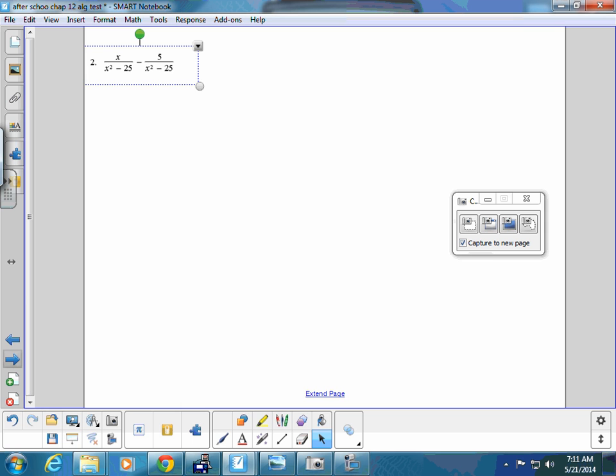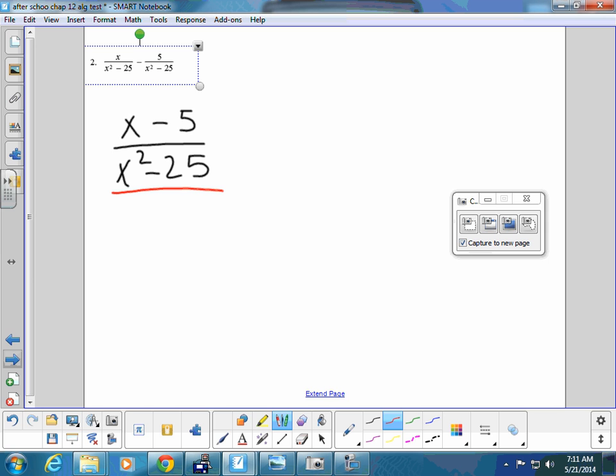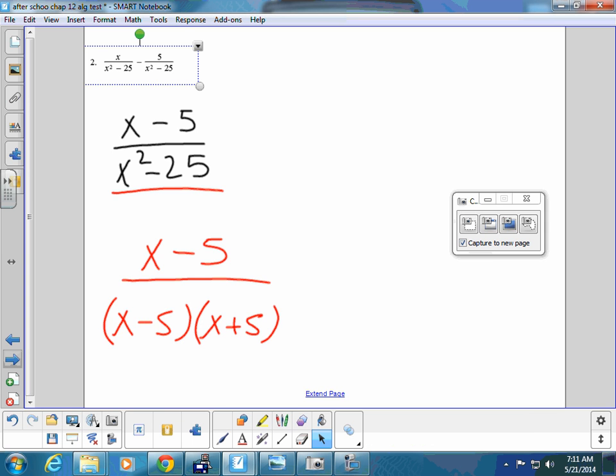Moving on to number 2. Number 2 also has a common denominator, so I can just combine the top. However, in this test, you need to recognize that this is a double bubble. This is x minus 5 over x minus 5, x plus 5, and the x minus 5s will cancel, leaving us with 1 over x plus 5.